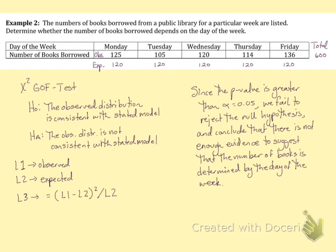To find the chi-squared test statistic, we want to sum these up. To do that, go to LIST, which is second STAT, then arrow over to MATH, and choose SUM, which is number five.